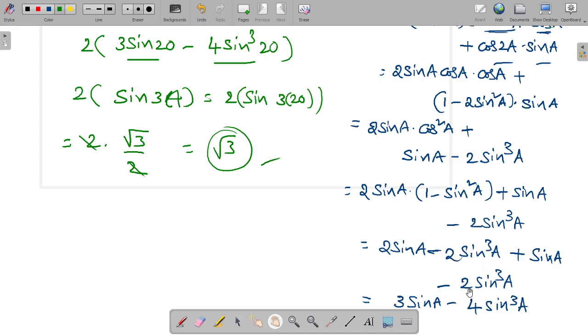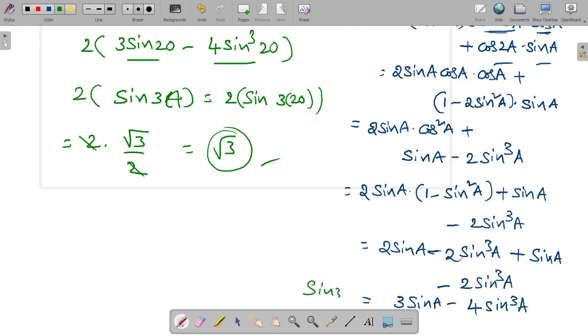4 sine cube A. Therefore, sin 3A is equal to 3 sine A minus 4 sine cube A. Understand? How it will come? All right. Thanks for watching.